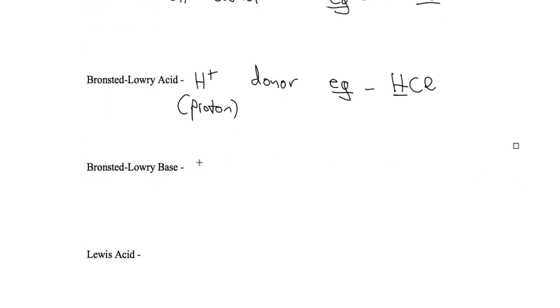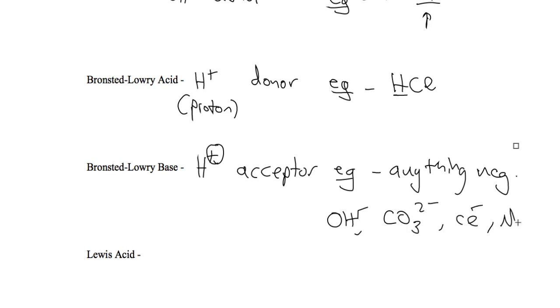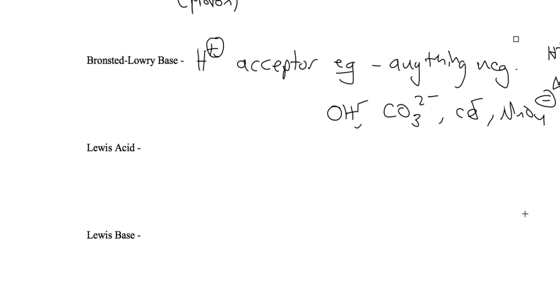A Bronsted and Lowry base is broadly defined as an H-plus acceptor, and this is anything that's negative can attract that H-plus. Okay, so for example, hydroxide is also a Bronsted and Lowry base, but it's not restricted to hydroxide. CO3 minus, chloride, permanganate, anything negative can attract an H-plus or accept an H-plus.